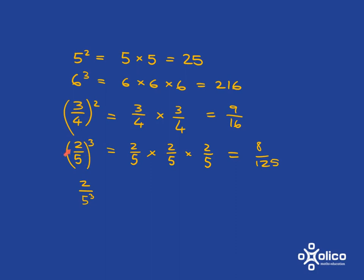in this one, it's the whole 2 fifths that gets cubed, whereas here it's just the 5 that gets cubed. So here what you'll have is 2 over 5 times 5 times 5. It's just the 5 that's getting cubed, so it'll be 2 over 125.